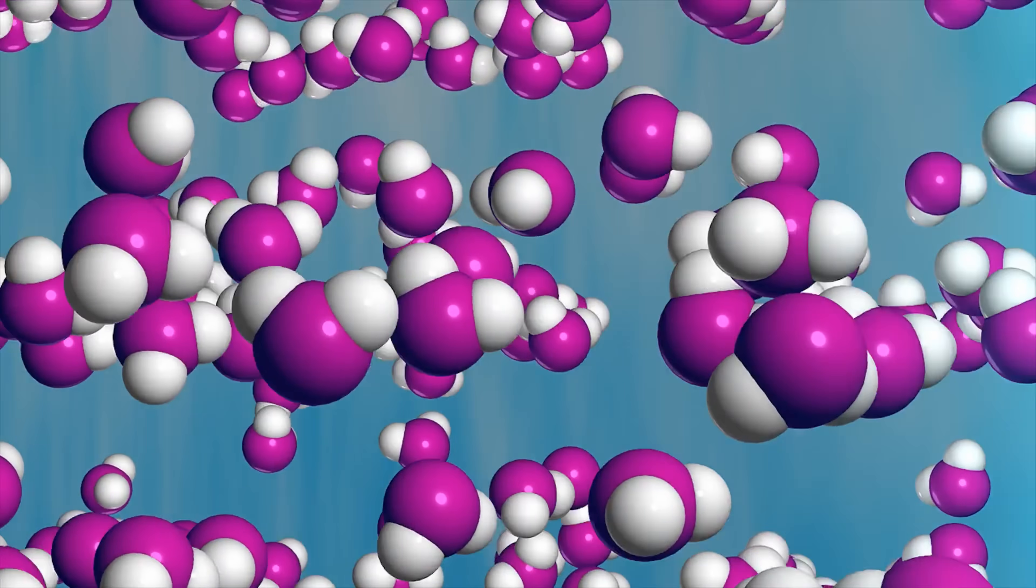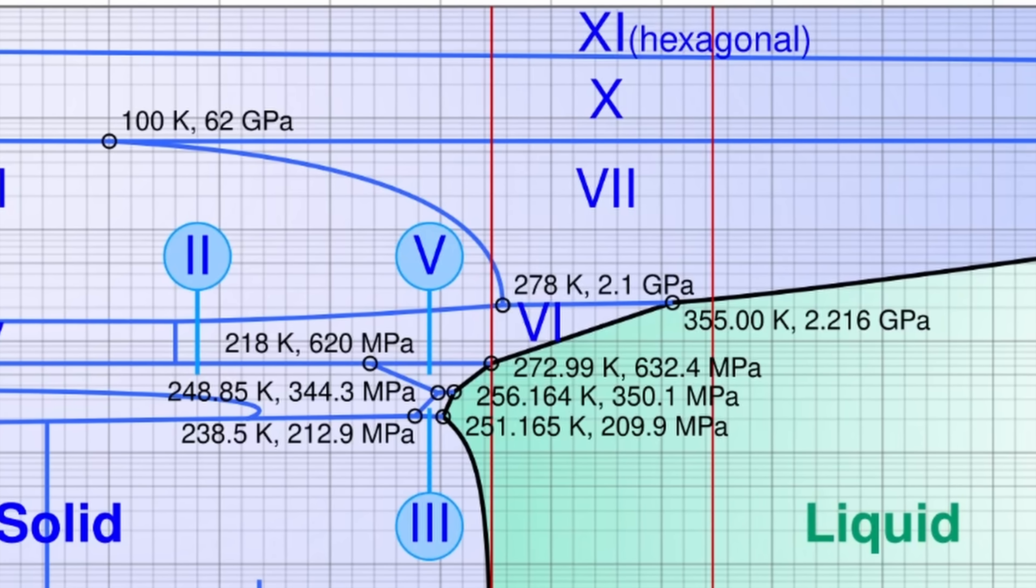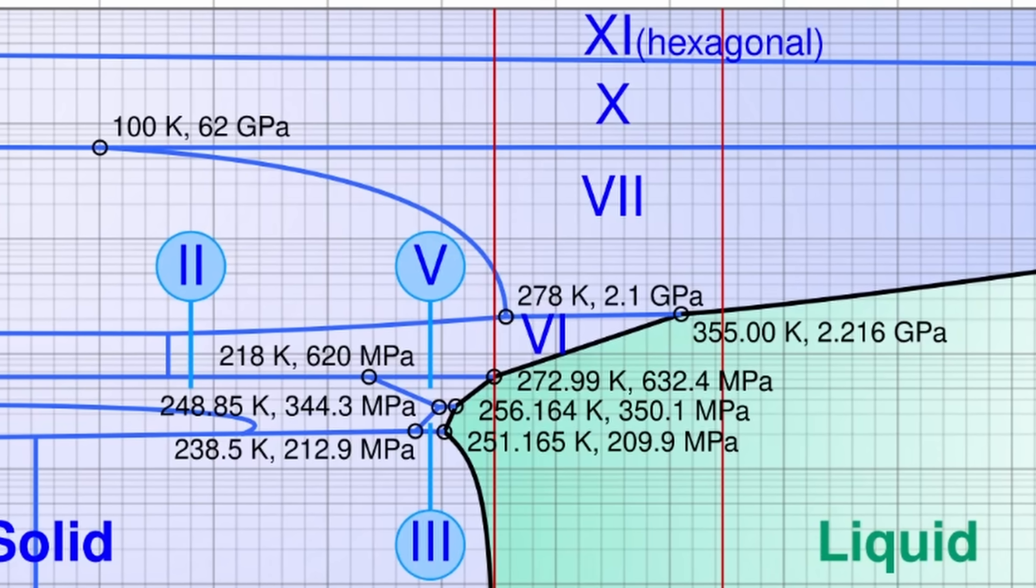And so in order to test if this hypothetical phase can exist in real life, researchers conducted an experiment by blasting water samples with a very powerful neutron beam at temperatures of 320 degrees Celsius and at very high pressures of approximately 60,000 bars. Which is basically in the middle of this graph for type 7 ice.